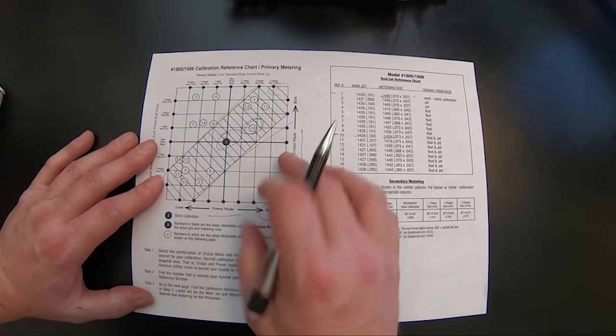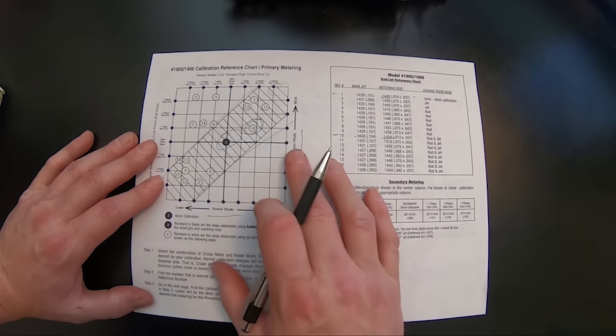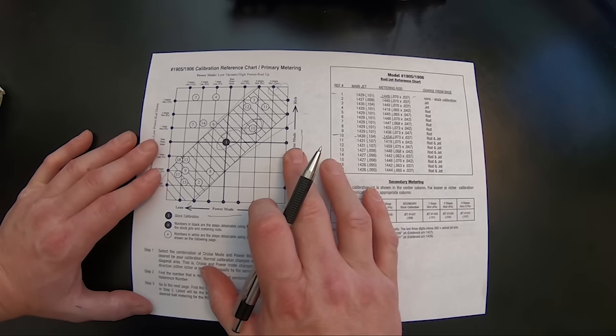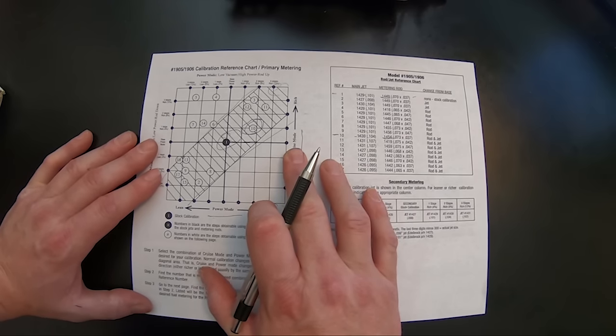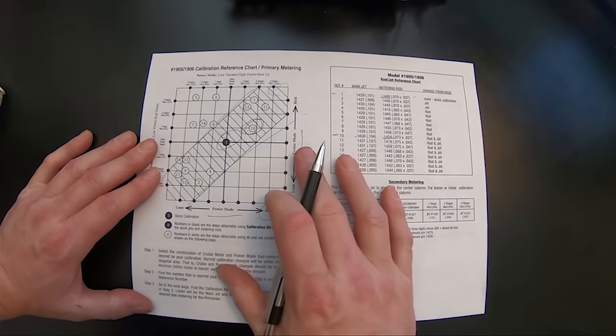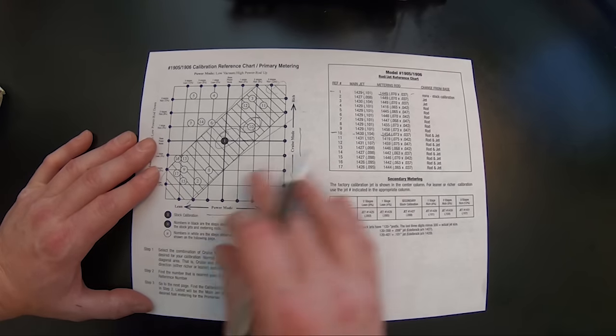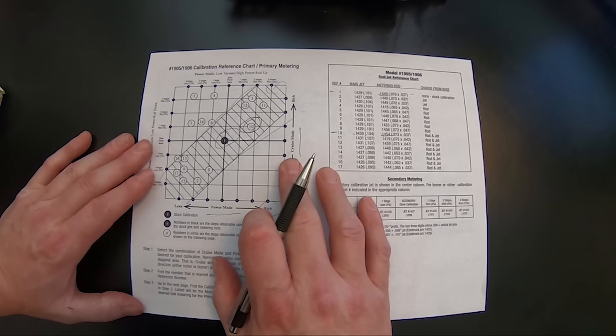Once you get that rod and jet change, then go out and drive it again, get it up to operating temperature, make sure the RPM set correctly on the carburetor, timing's good and see how it is. If it fixed it and it took that hesitation away, then you know you're good.